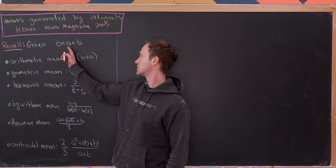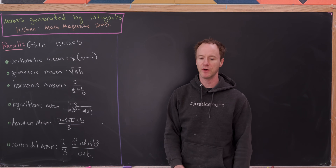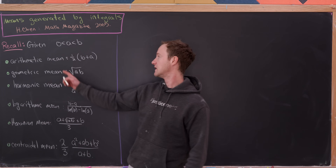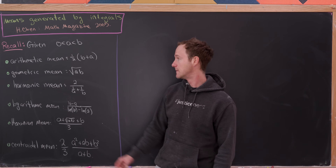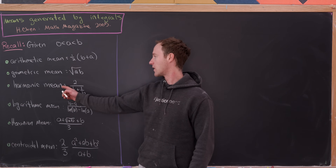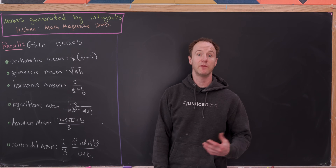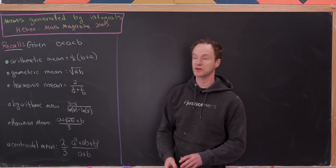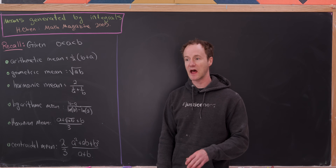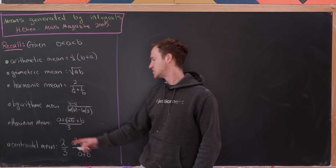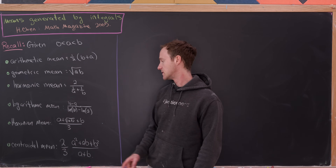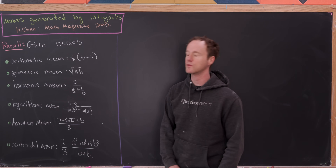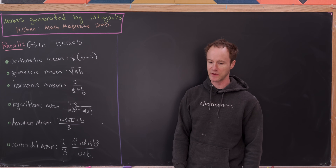Let's say we've got positive real numbers with a greater than zero and b greater than a. The arithmetic mean is simply the average: half their sum. The geometric mean is the square root of their product. The harmonic mean is two over the sum of their reciprocals. The logarithmic mean is (b minus a) over (ln b minus ln a). The Heronian mean is (a + √(ab) + b) / 3. And the centroidal mean is (2/3) times (a² + ab + b²) over (a + b).